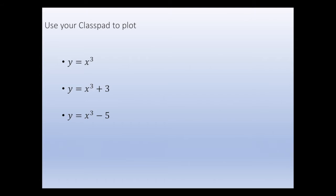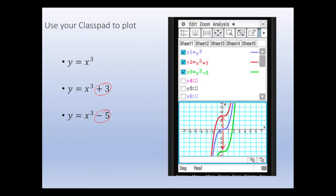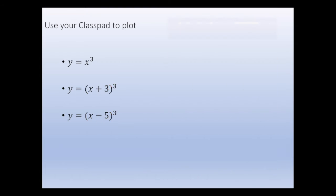Plot y equals x cubed, then y equals x cubed plus 3, and y equals x cubed minus 5. The plus 3 and minus 5 translate the graph of y equals x cubed up and down. Plus 3 translates the graph up by 3; minus 5 translates it down by 5.